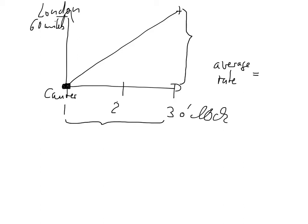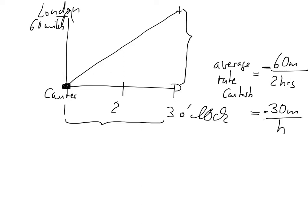The average rate from Canterbury would be 60 miles in two hours. Because we are going away from Canterbury, it gets a negative sign, so the average rate is minus 30 miles per hour. If we just look at the speed, it would be plus 30 miles per hour, because speed has no direction.